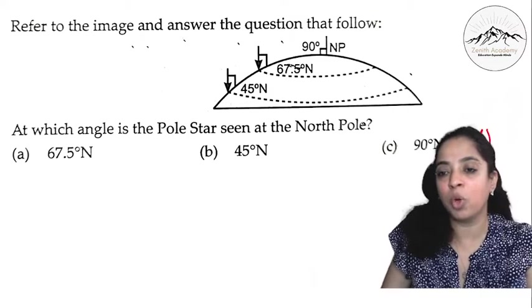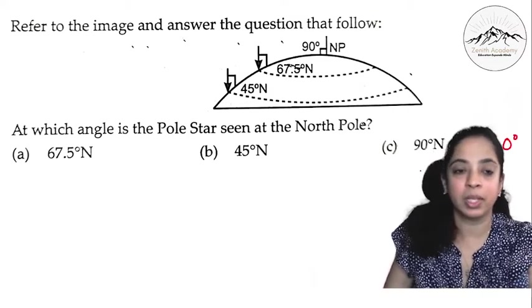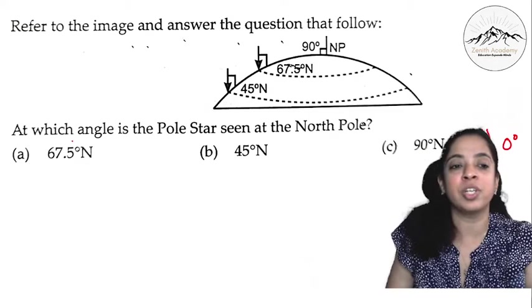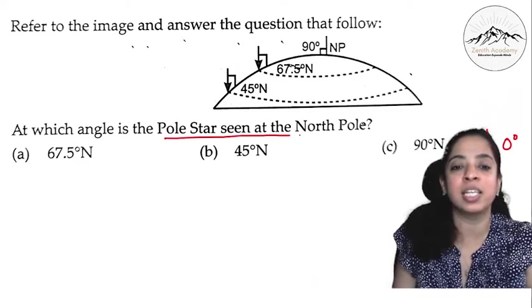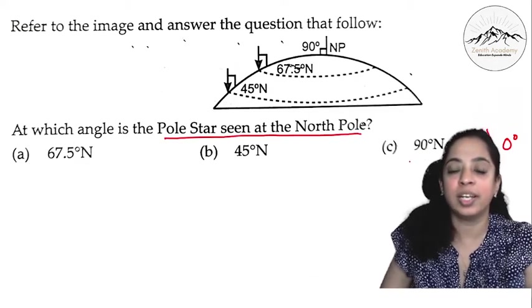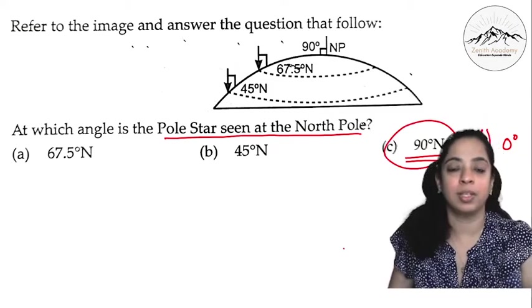Now, we can have one more option, maybe zero degree. So refer to the image and answer the question, at which angle is the pole star seen in the north pole? So it is at 90 degree north.